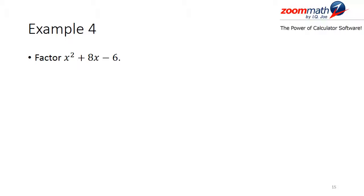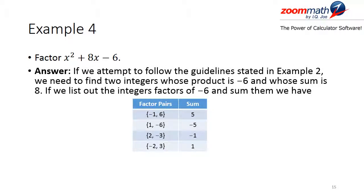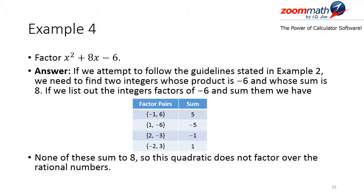Our last example asks us to factor x squared plus 8x minus 6. Following the guidelines from example 2, we need two integers whose product is negative 6 and whose sum is 8. Listing the integer factor pairs of negative 6: negative 1 and 6 (sum: 5), 1 and negative 6 (sum: -5), 2 and negative 3 (sum: -1), and negative 2 and positive 3 (sum: +1). None of these sum to 8, so this quadratic does not factor over the rational numbers.